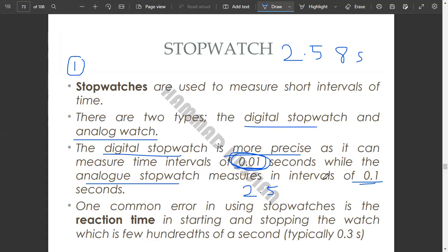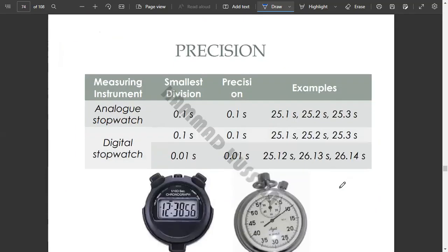One common error in using stopwatches is the reaction time in starting and stopping the watch, which is a few hundredths of a second. Typically it's 0.3 seconds in your physics, which is human reaction time, because we are all just human beings, not robots. It typically takes 0.3 seconds to actually start the stopwatch.